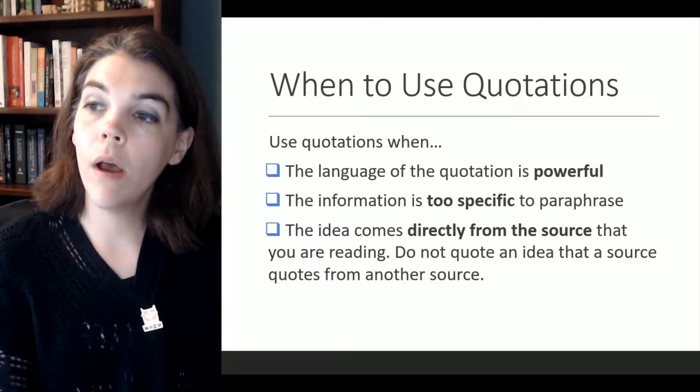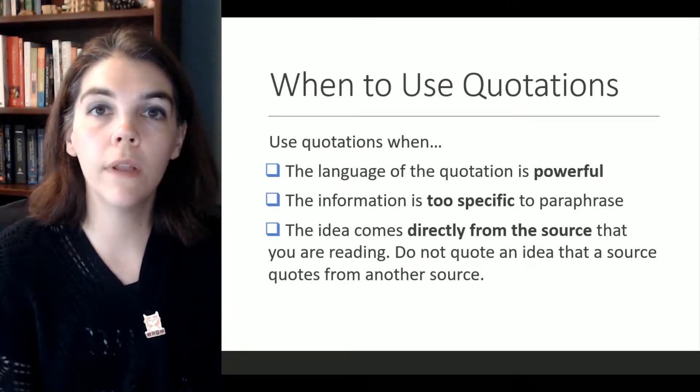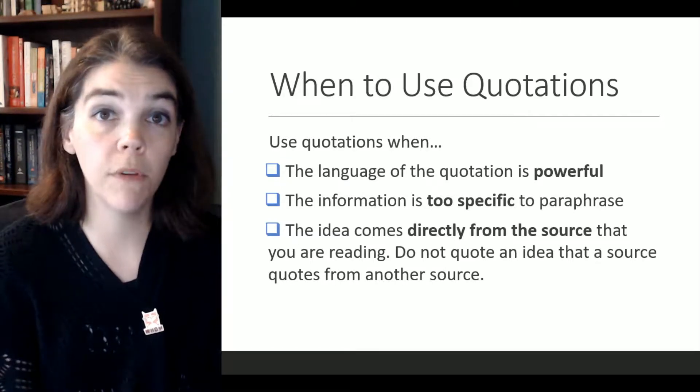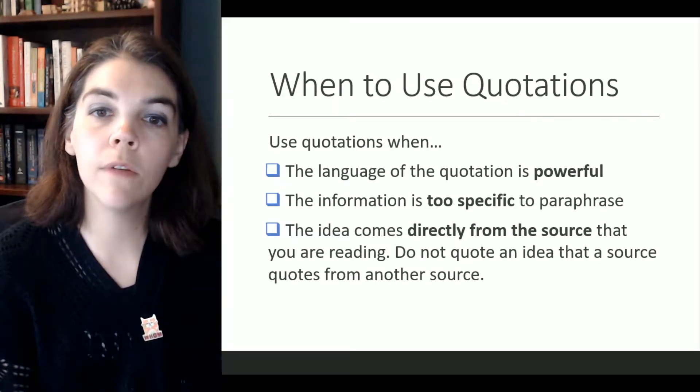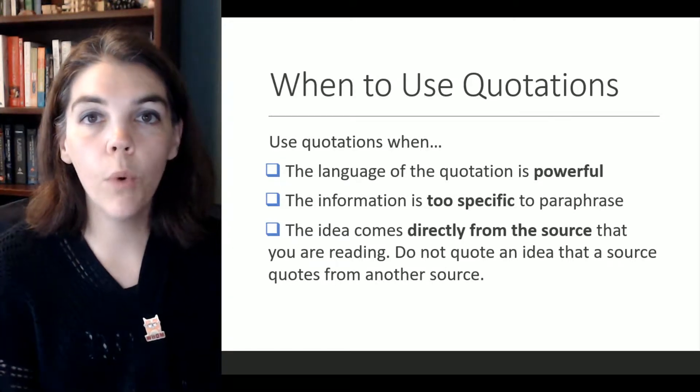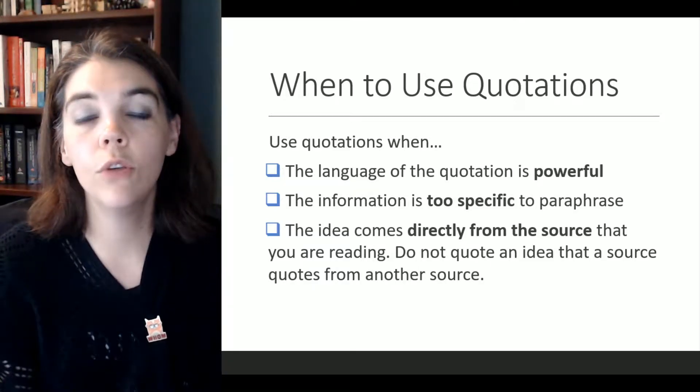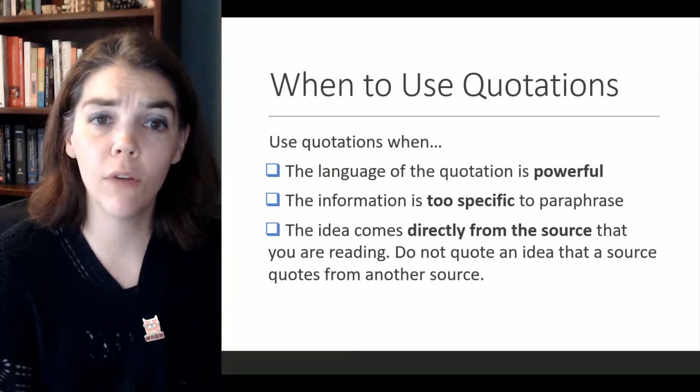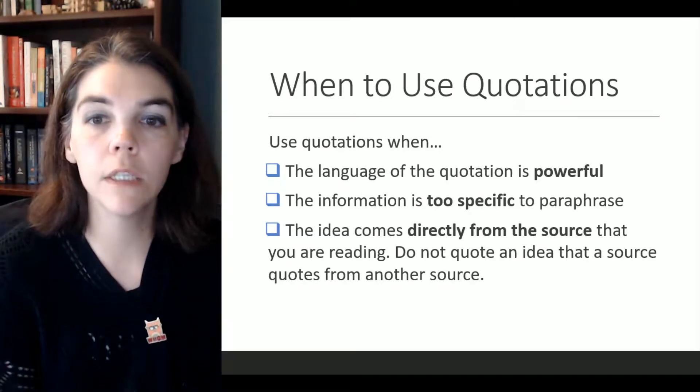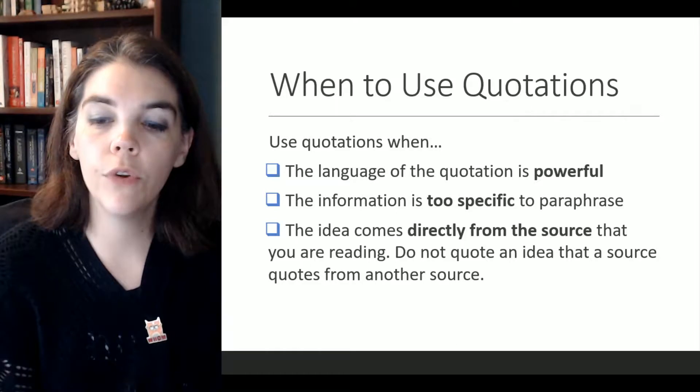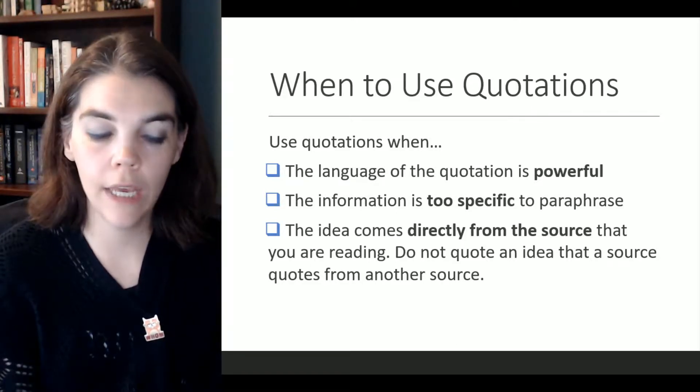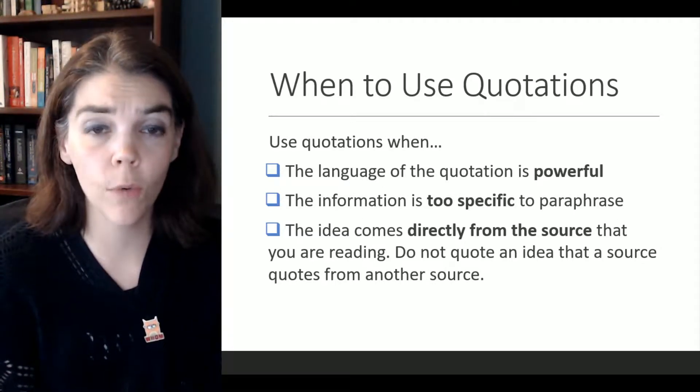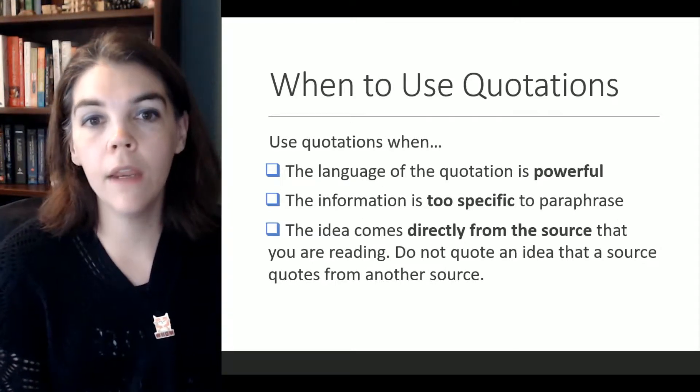When we use quotations, we do so when the language is very powerful or it's too specific to paraphrase. You quote for sources that you're reading directly. You do not quote ideas that a source takes from another quote. If you're reading something and they tell you about research from somewhere else, don't quote that. Go to that source directly and then paraphrase or quote.